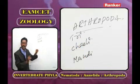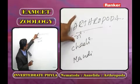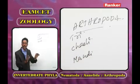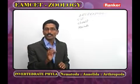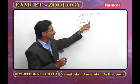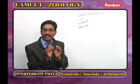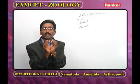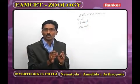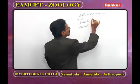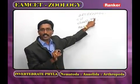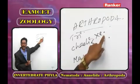The second subphylum is Chelicerata. Important note: in Chelicerata, antennae are totally absent. The body is divided into prosoma and opisthosoma — 6 segments in the prosoma, 13 in the opisthosoma, totaling 19 segments. The first pair of appendages are modified into chelicerae, which help in feeding — hence the name Chelicerata. Chelicerata is classified into two classes: Merostomata and Arachnida.